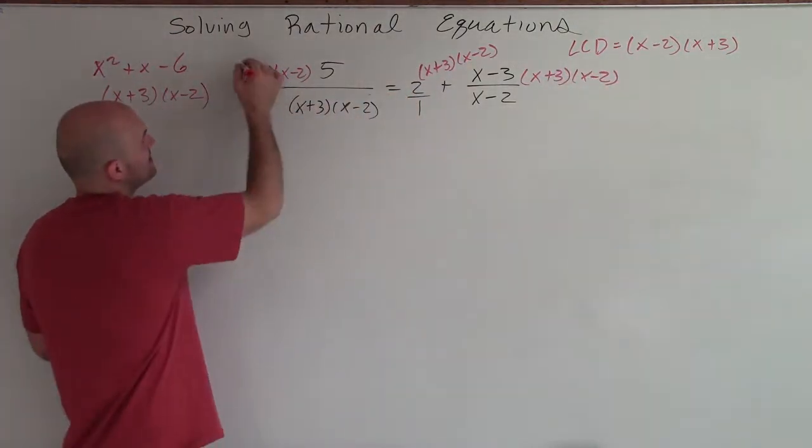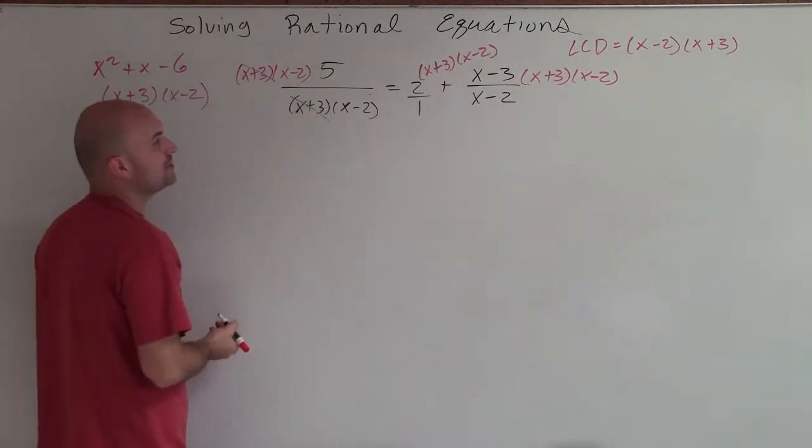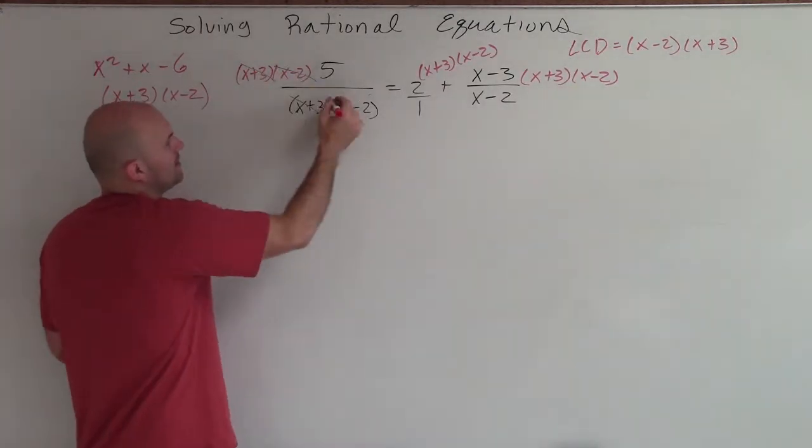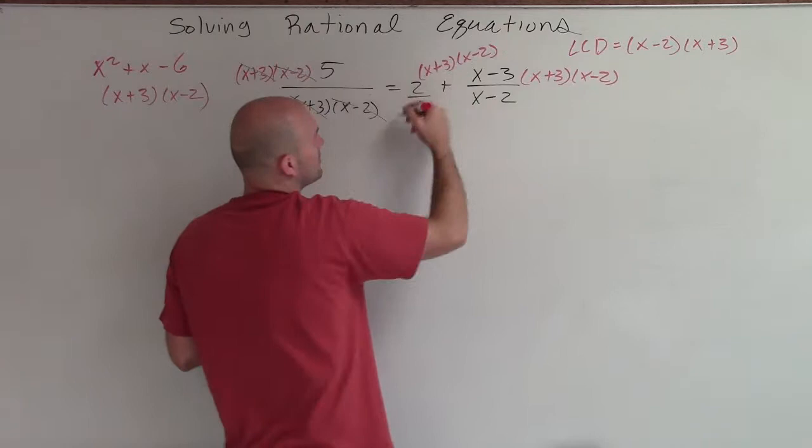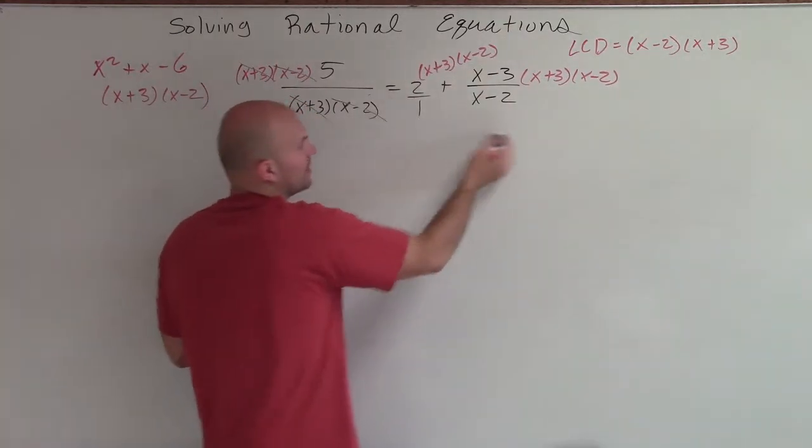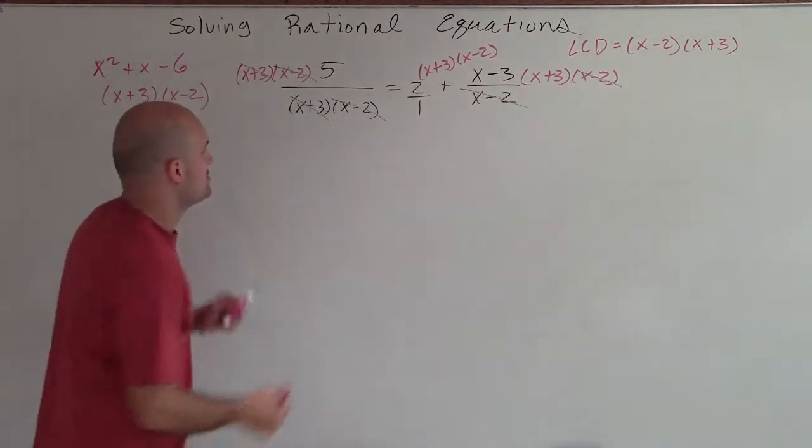And what's nice about that, you can see how it eliminates, because x plus 3 in the numerator and x plus 3 in the denominator divide to 1. So that divides to 1. Over here, nothing is going to divide out to 1 with 1. But over here, my x minus 2 divides out.